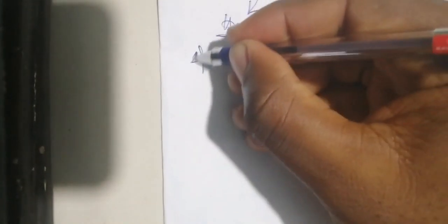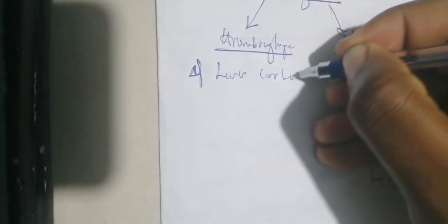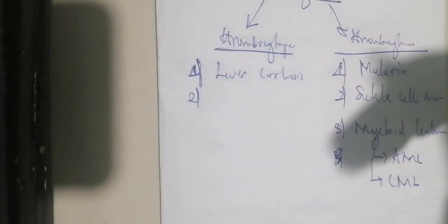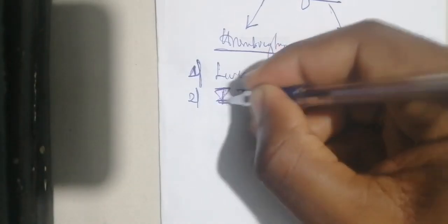For thrombocytopenia, the first thing to evaluate is its cause. The first cause of thrombocytopenia is systemic conditions, where there is pooling of thrombocytes in a part of the body rather than distributed throughout — for example, in liver cirrhosis, thrombocytes are stored in the ascitic fluid.